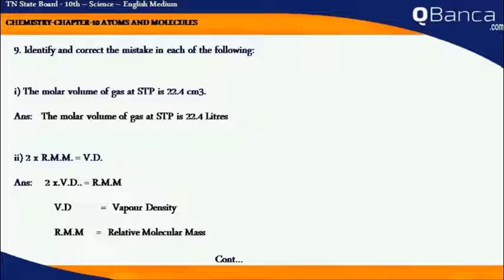Identify and correct the mistake in each of the following. The molar volume of gas at STP is equal to 22.4 cm³. No, the unit will be in liter. That is, the molar volume of gas at STP is 22.4 liter.